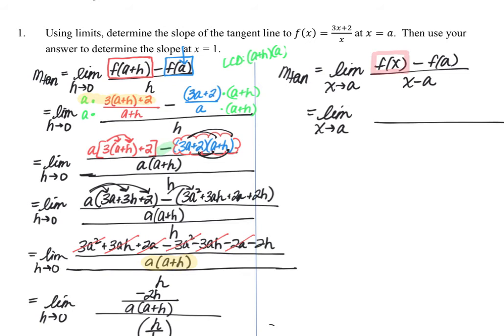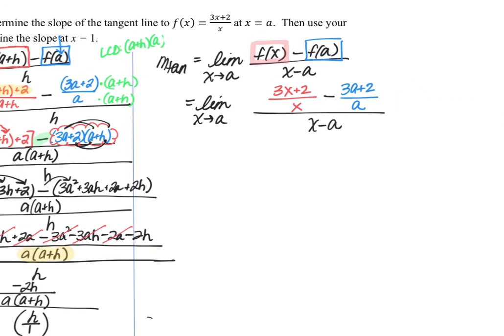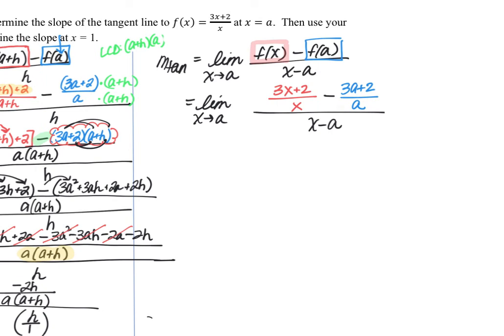So f of x is just the original function, which was 3x plus 2 over x minus f of a means we're plugging a into that function. So that would be 3a plus 2 over a. That's all divided by x minus a. I'm going to scoot over so you can see better. So now we still try direct substitution, but if I substitute a in for x, I'm going to end up with a minus a, which would be 0 in the denominator. And that's why that will not work.